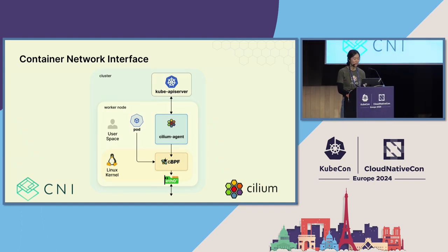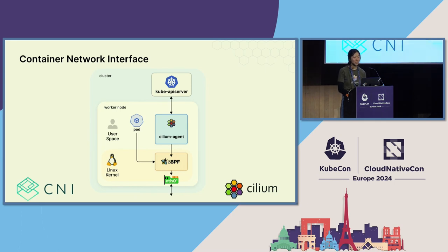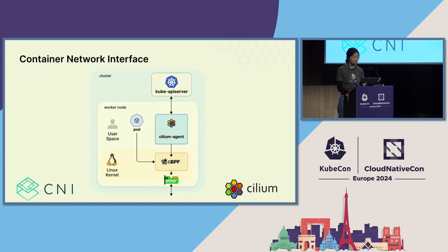At a high level, the Cilium agent accepts configurations from the Kube API server that describes networking, service load balancing, network policies known as Cilium network policies, and visibility and monitoring requirements. Because Cilium is a lot, it uses the agent as kind of the de facto management on your node. It manages the eBPF programs that reside on the kernel and uses them to control all network access.